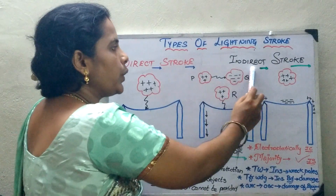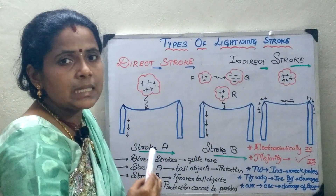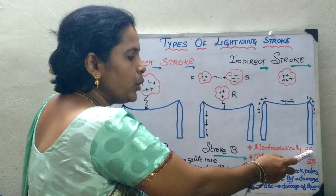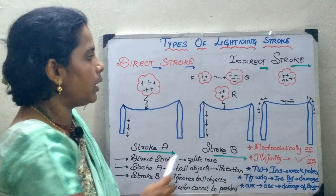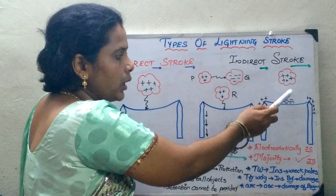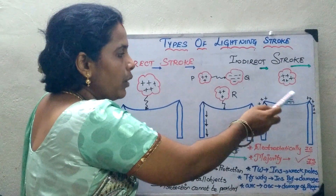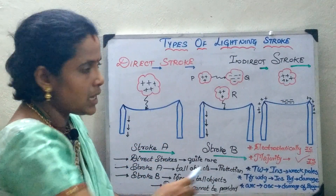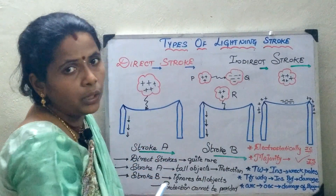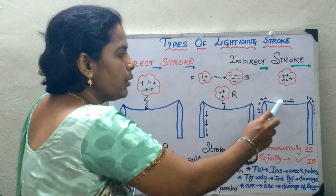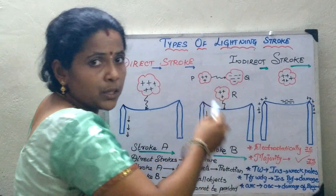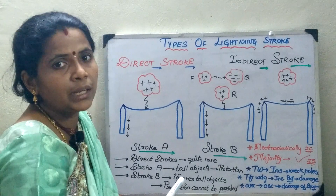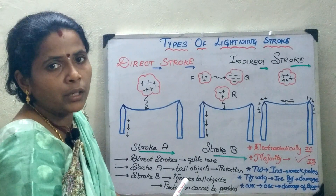Now we will move on to the indirect stroke. The indirect lightning stroke mainly evolves from the electrostatically induced charge in the cloud. A positively charged cloud induces a negative charge, which in turn induces positive charges on both sides of the line, and this positive charge is drained to the ground. The free negative charges travel back and forth along the line.